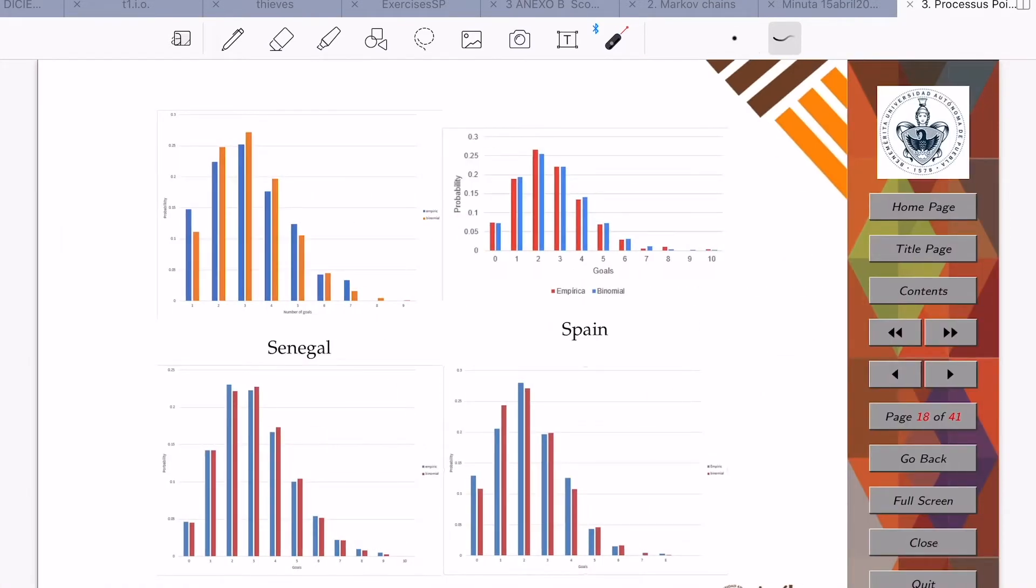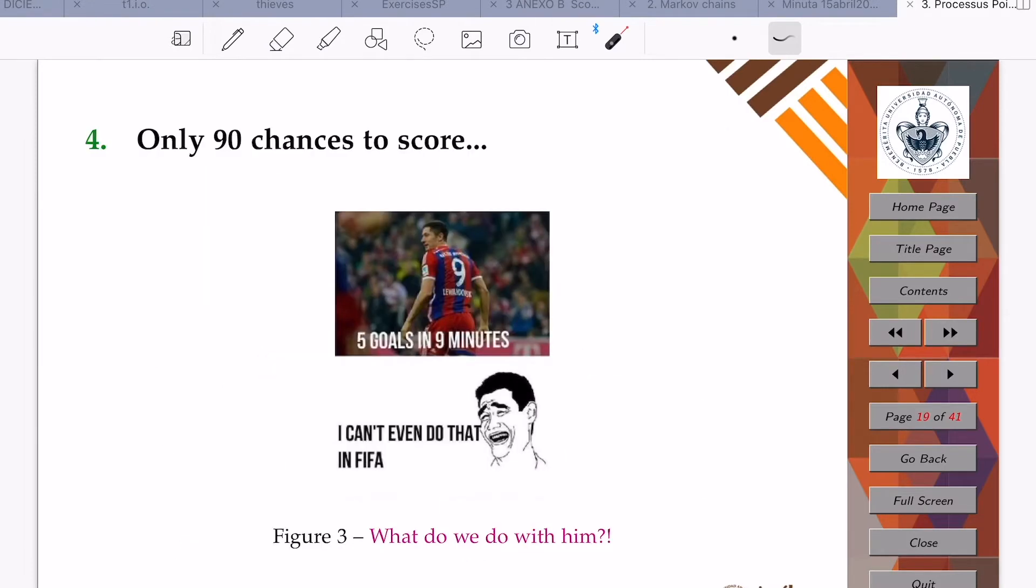Here we see a comparison between the empiric distributions, the ones in blue, against the counting process given by the binomial random variable for Senegal, for Spain, for USA, and for Argentina.